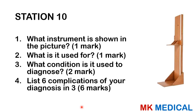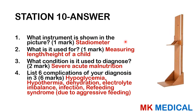Station ten: what instrument is shown in the picture? What is it used for? What condition is it used to diagnose? List six complications of your diagnosis. This is a stadiometer, used for measuring the length or height of a child. It can be used in the diagnosis of severe acute malnutrition. Complications include hypoglycemia, hypothermia, dehydration, electrolyte imbalance, infections, and refeeding syndrome, which can result from aggressively feeding the child.